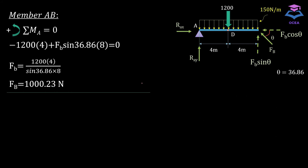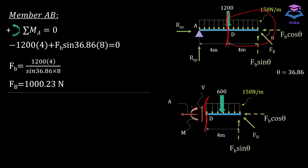Now that we have FB, we cut a section at point D and take the right-hand segment. Before applying the equations of equilibrium, we calculate the resultant of the UDL on this segment, which is the area of the rectangle: 150 times 4 equals 600 Newtons.